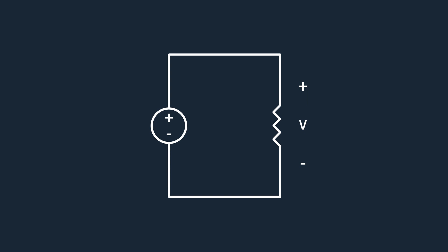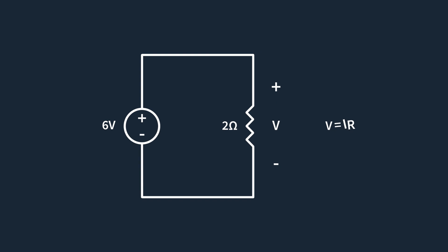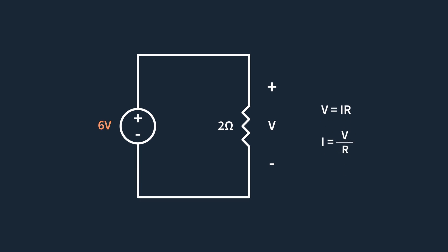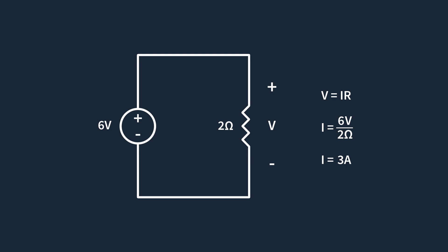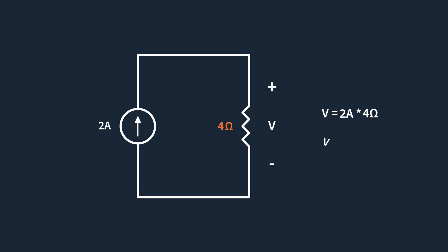This is a simple circuit with two elements: a voltage source supplying 6 volts and a resistor of 2 ohms. Using Ohm's law, we can solve for the current flowing through the 2-ohm resistor. According to Ohm's law, V = I × R. Since V = 6 volts and R = 2 ohms, we solve for I and get 3 amps. Let's take a look at another example with a current source. The given circuit has two elements: a current source supplying 2 amps and a resistor of 4 ohms. To find the voltage drop across the 4-ohm resistor, we use Ohm's law: since I = 2 amps and R = 4 ohms, we find that the voltage across the resistor is 8 volts.